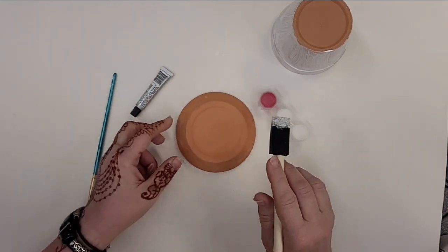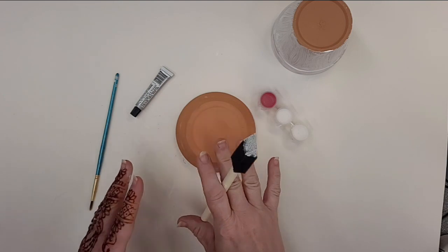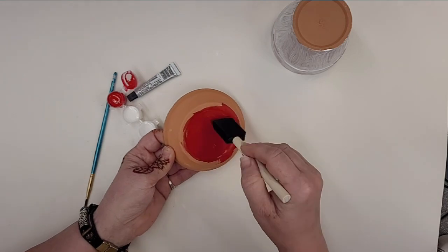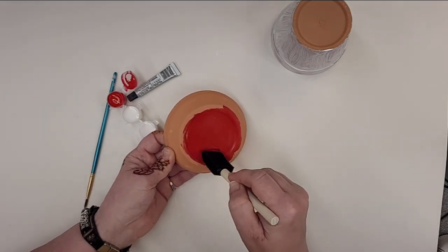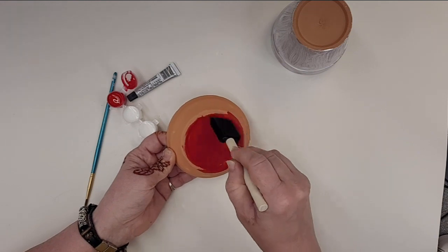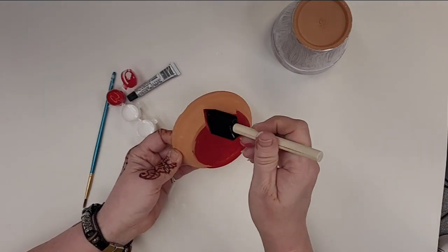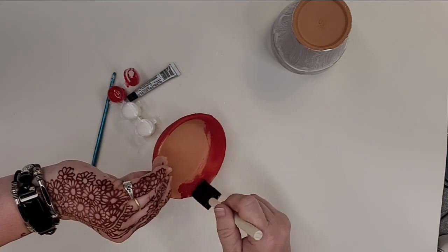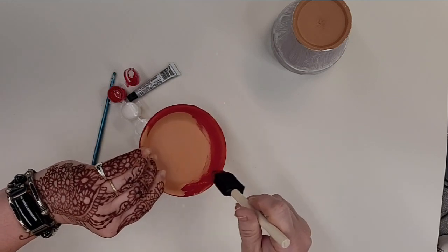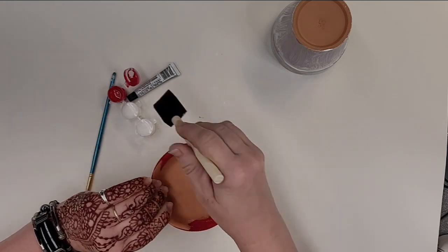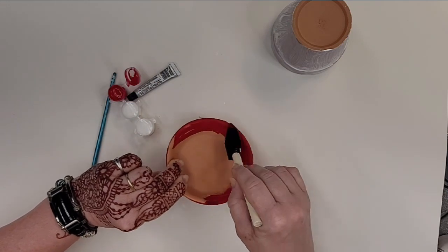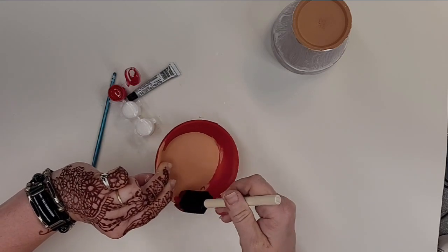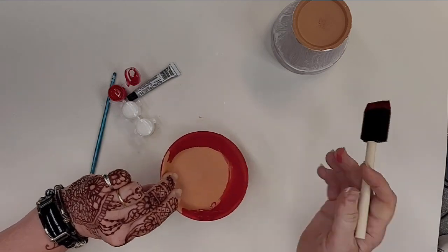Now the red is going to be a little bit more opaque, so you probably are not going to need two coats for the red. The inside part of this does not need to be perfect, does not need to be a perfect line or anything like that. It's just in case anybody turns it over.